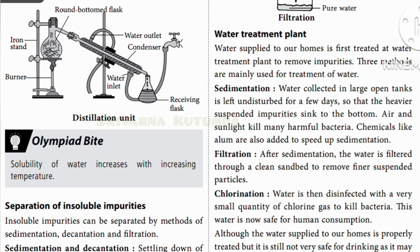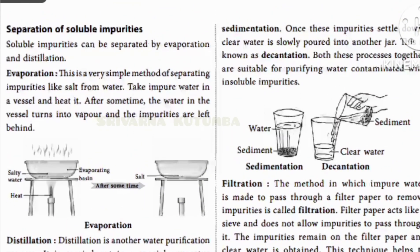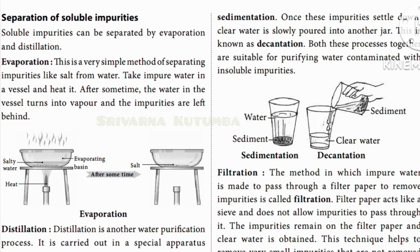The solubility of water increases with temperature — the more the temperature, the more the solubility. For removing insoluble impurities, the most common method is sedimentation and decantation. Take some mud water and leave it for some time, then carefully pour the clear water into another glass making sure the sediments do not flow out. Then proceed to filtration.